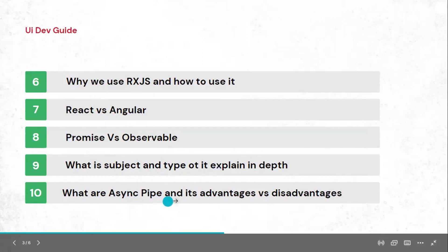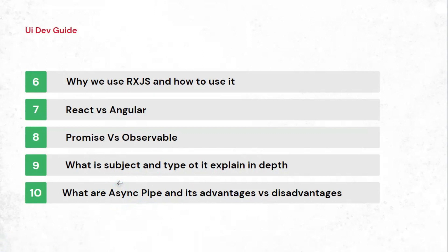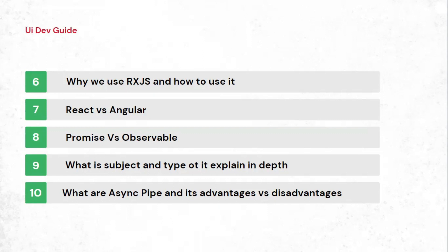The next question is: what is the async pipe and what are its advantages and disadvantages? Basically, the async pipe automatically subscribes to an observable. The advantage is that we don't need to manually unsubscribe — it gets automatically unsubscribed. Usually we create a subscription at the component level and need to unsubscribe in ngOnDestroy when moving to another component. The disadvantage is that whenever something changes in any observable at the component level, it tries to access that observable data every time in the HTML, which is why most of the time we avoid using async pipe.